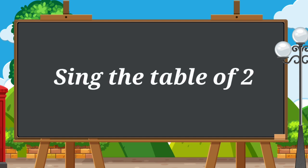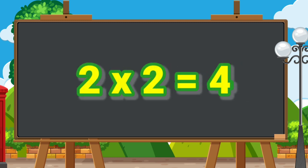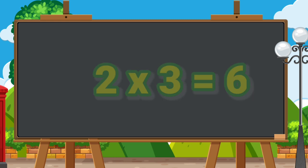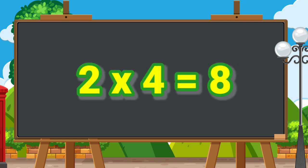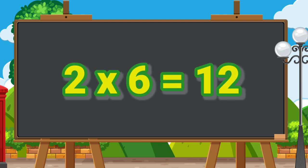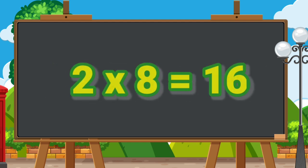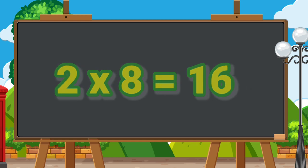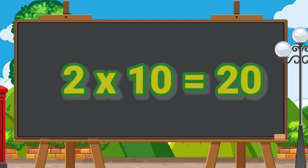Now, children, let's all sing the table of 2. 2 ones are 2. 2 twos are 4. 2 threes are 6. 2 fours are 8. 2 fives are 10. 2 sixes are 12. 2 sevens are 14. 2 eights are 16. 2 nines are 18. 2 tens are 20.